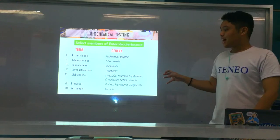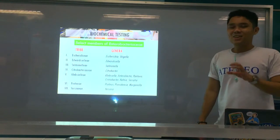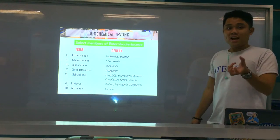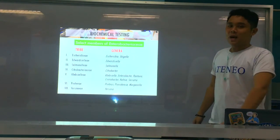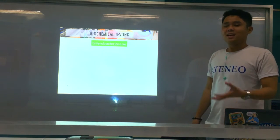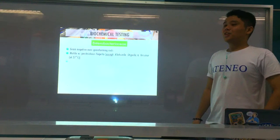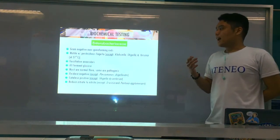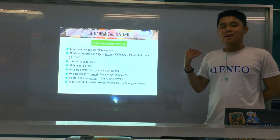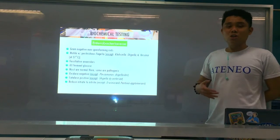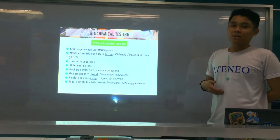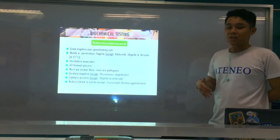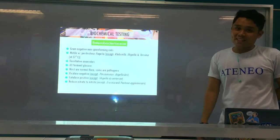Now we go to the general characteristics of your Enterobacteriaceae. What are Enterobacteriaceae? Your Enterobacteriaceae are Gram-negative, non-spore-forming rods. When you say Enterobacteriaceae, they are the Gram-negative bacilli or the bacteria that usually inhabit your gut microbiota — your gastrointestinal microbiota or normal flora. So, normal flora in your intestines — that's Enterobacteriaceae.